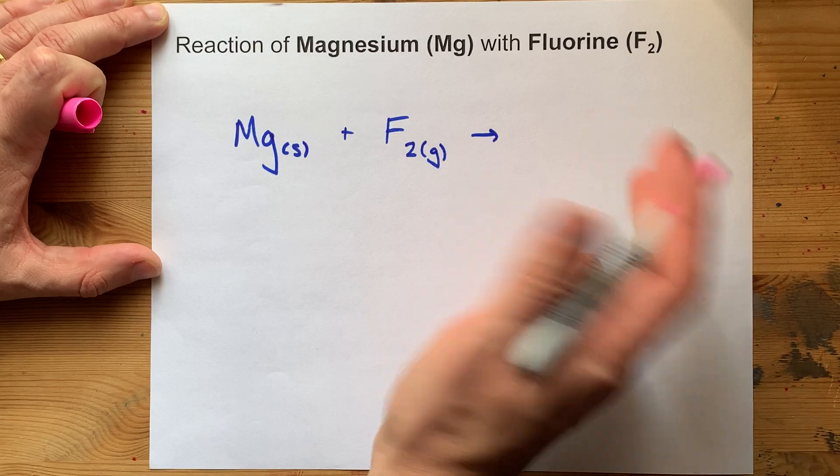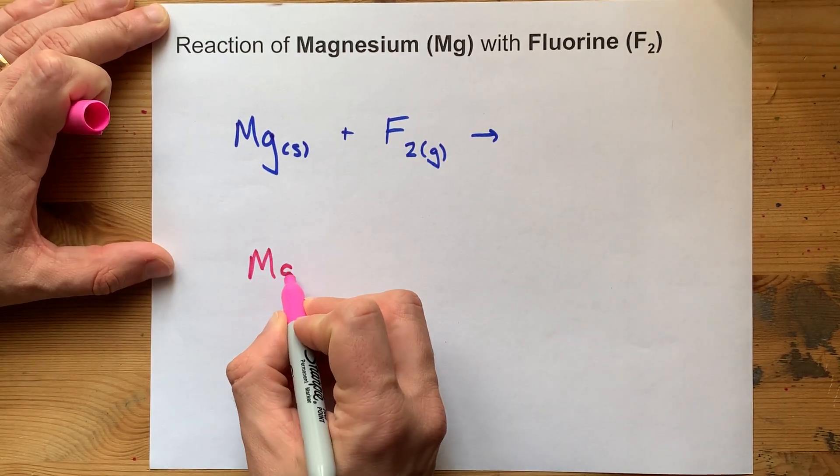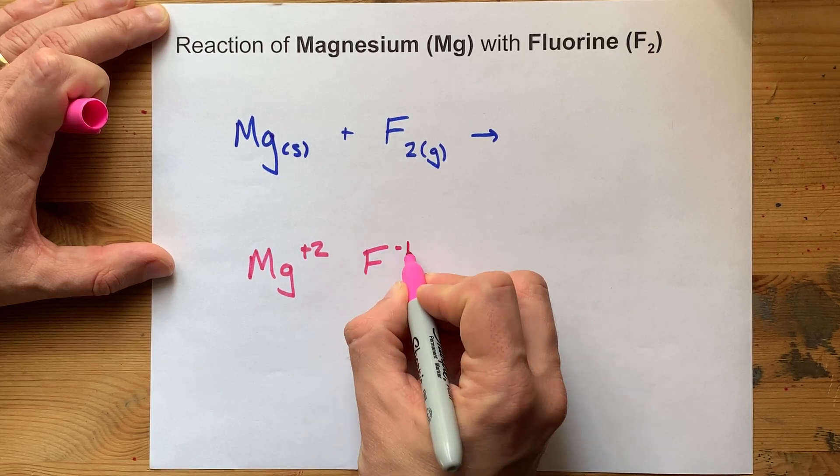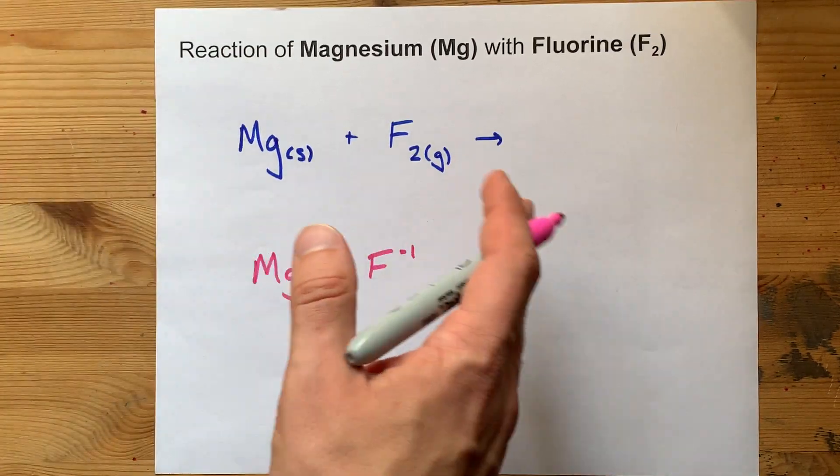But you came here for this reaction. Magnesium wants a charge of plus two. It's in the second column. Fluorine wants a charge of minus one. It's in the second last column.